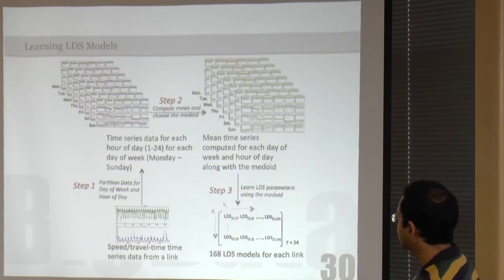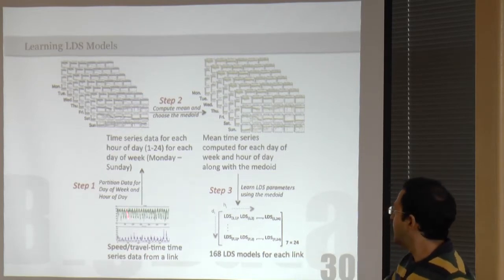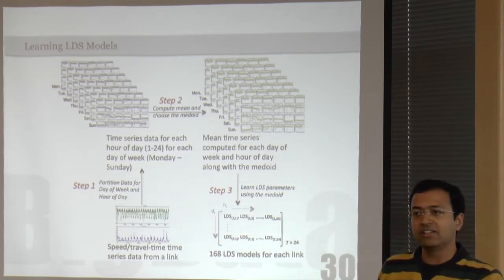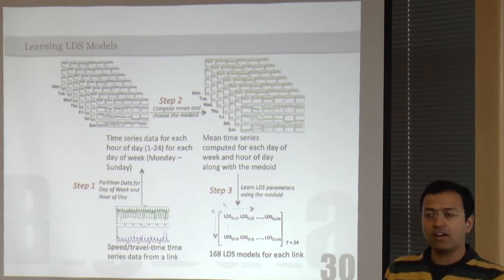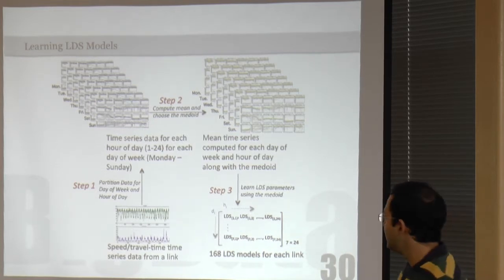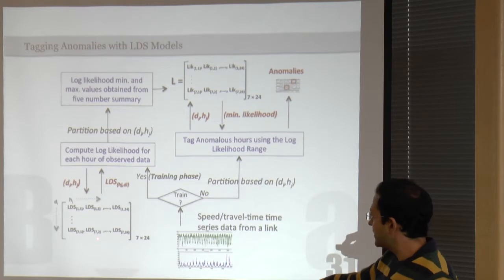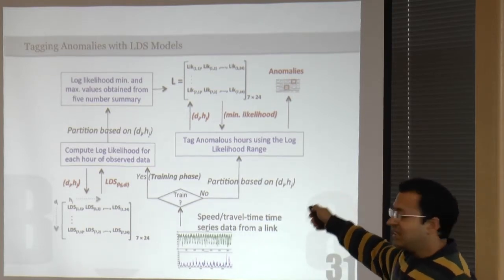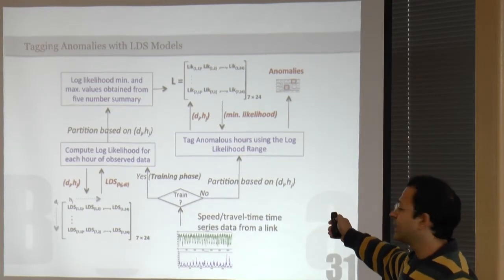All you need to know is that we take one year's worth of data and build a model — this model is for every link in the road network, which is around 3,500 links, and for every hour of day and every day of week. So I build these models based on one year's worth of data. I take data and tag anomalies — you need not know all the details, but just remember that I'm tagging anomalies. I take these anomalies and combine them with events extracted from Twitter, then try to explain the anomalies using those events. This is just submitted to a conference.